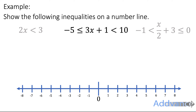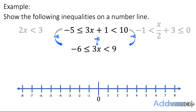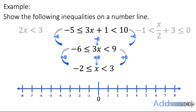Next: minus 5 is less than or equal to 3x plus 1 is less than 10. We start by subtracting 1 from all three parts: minus 5 minus 1 is minus 6, 3x plus 1 minus 1 is 3x, and 10 minus 1 is 9. Now we divide everything by 3: minus 6 divided by 3 is minus 2, 3x divided by 3 is x, and 9 divided by 3 is 3. We get minus 2 is less than or equal to x is less than 3.